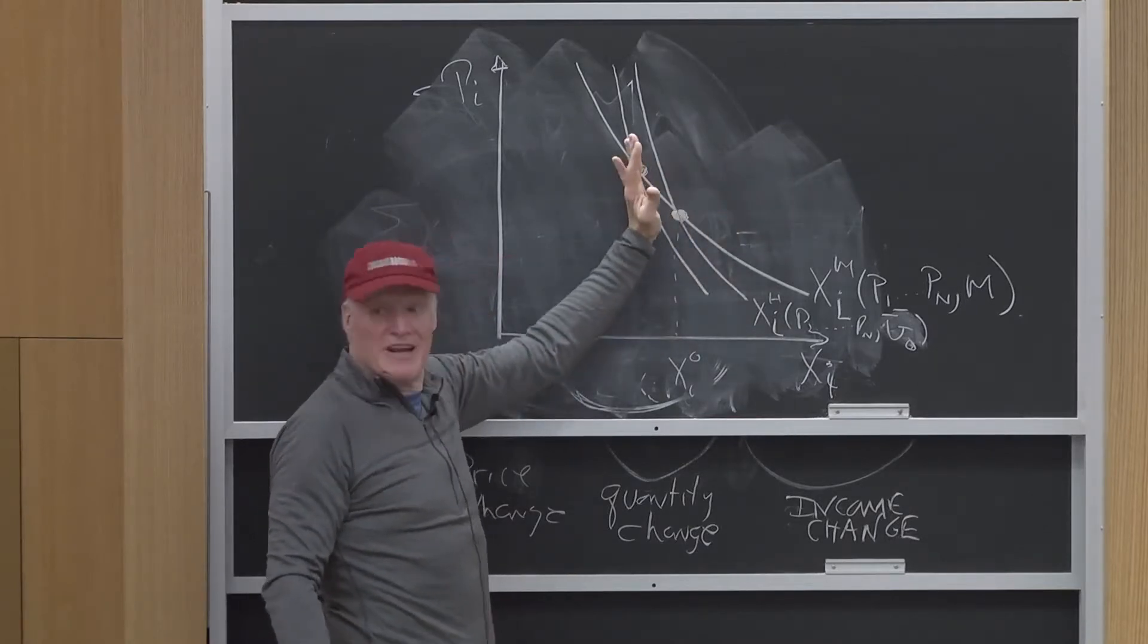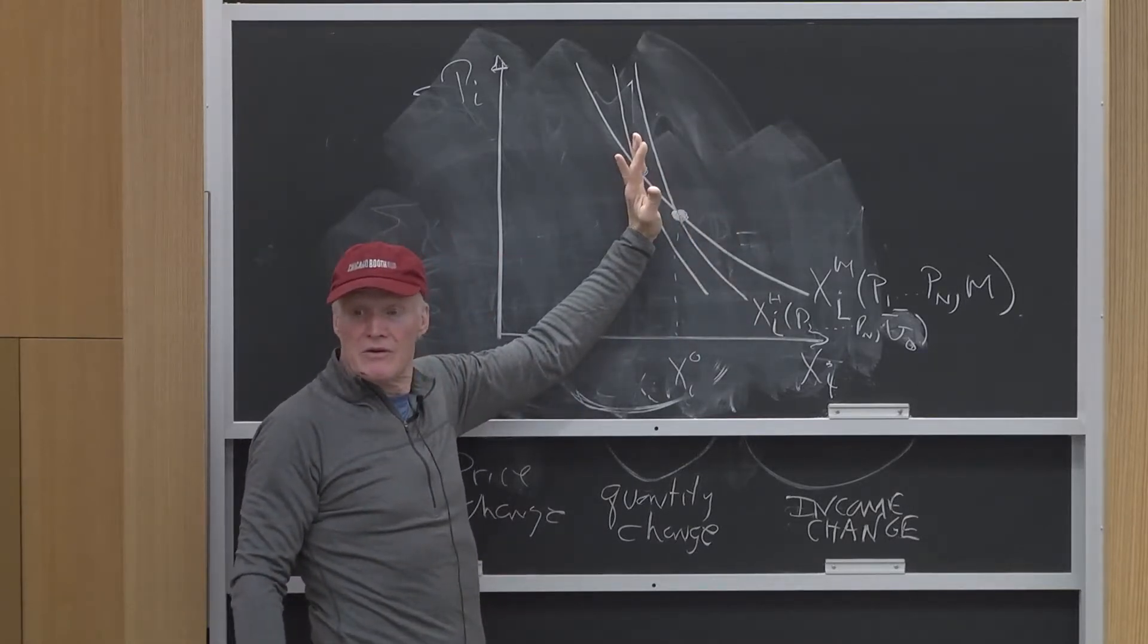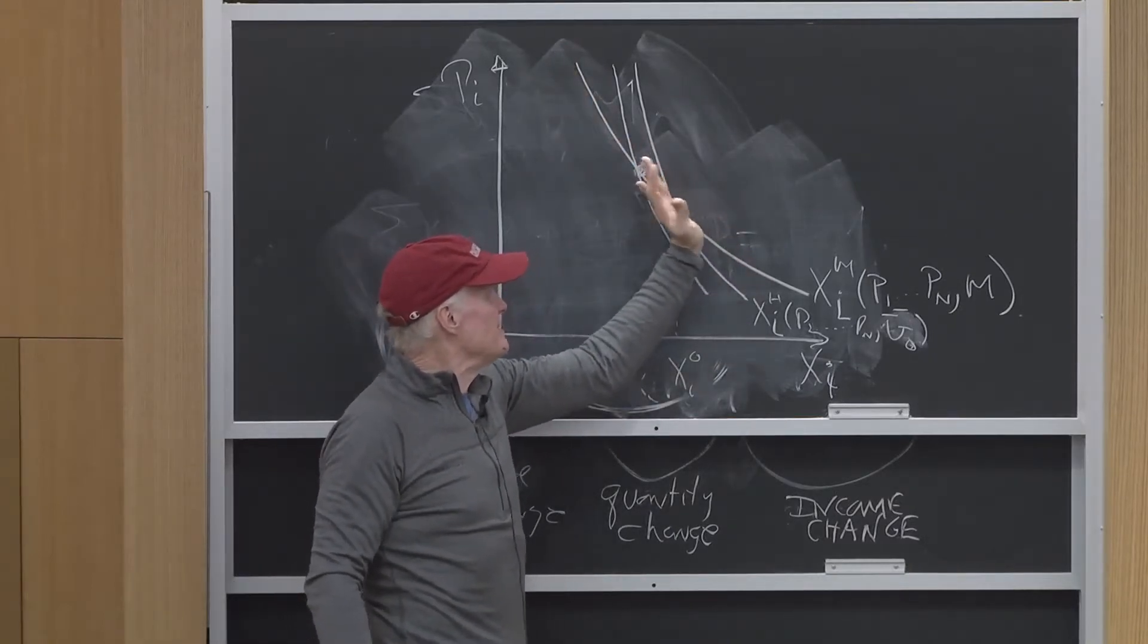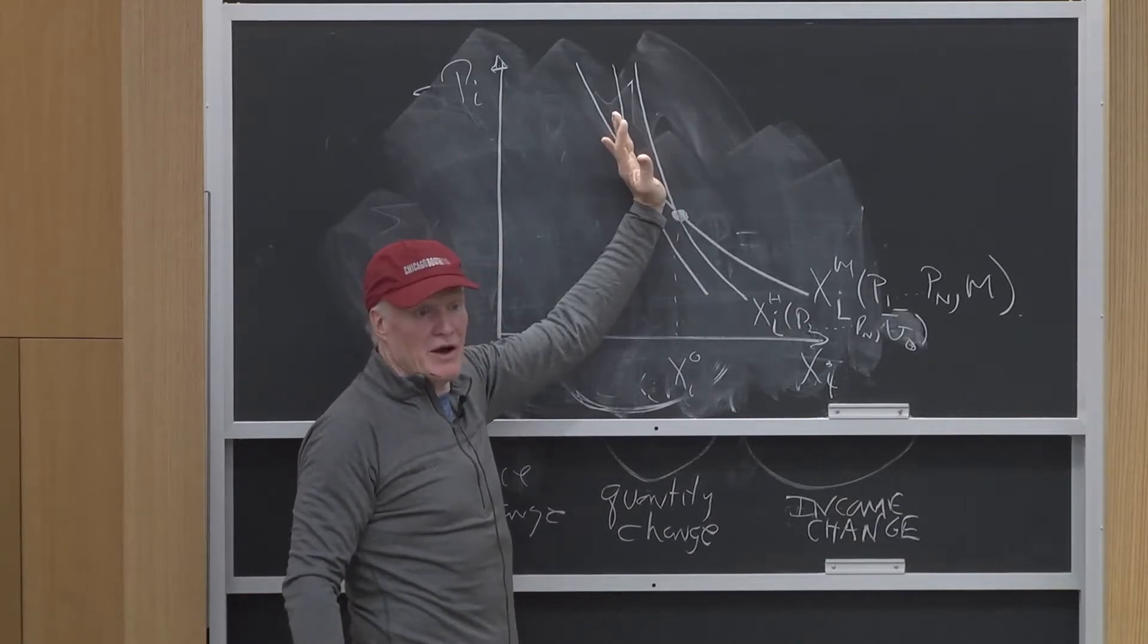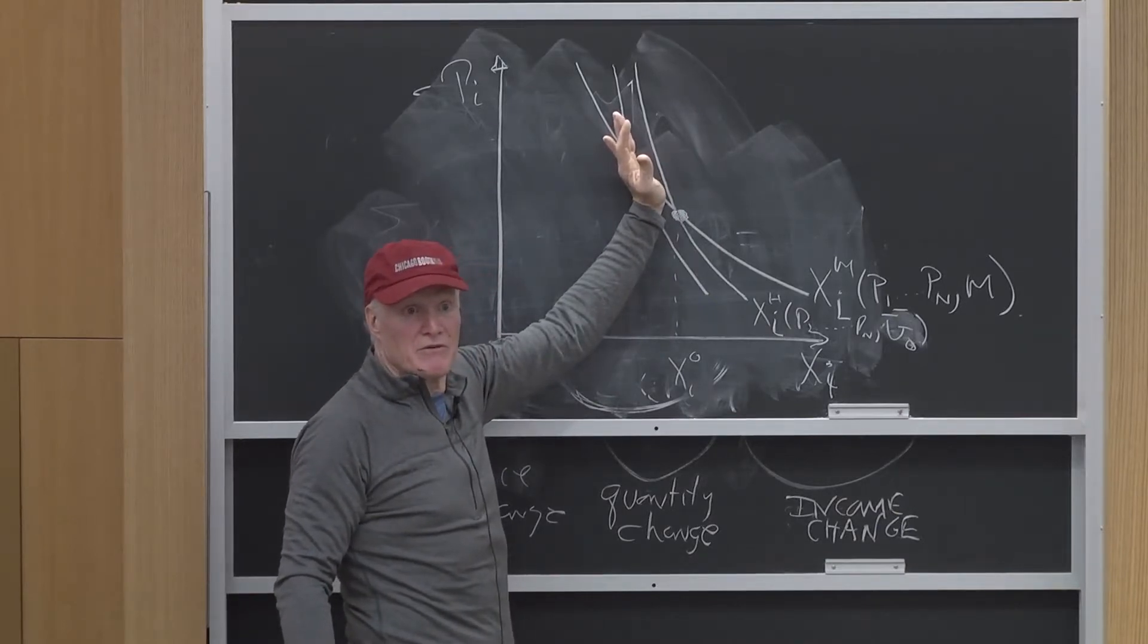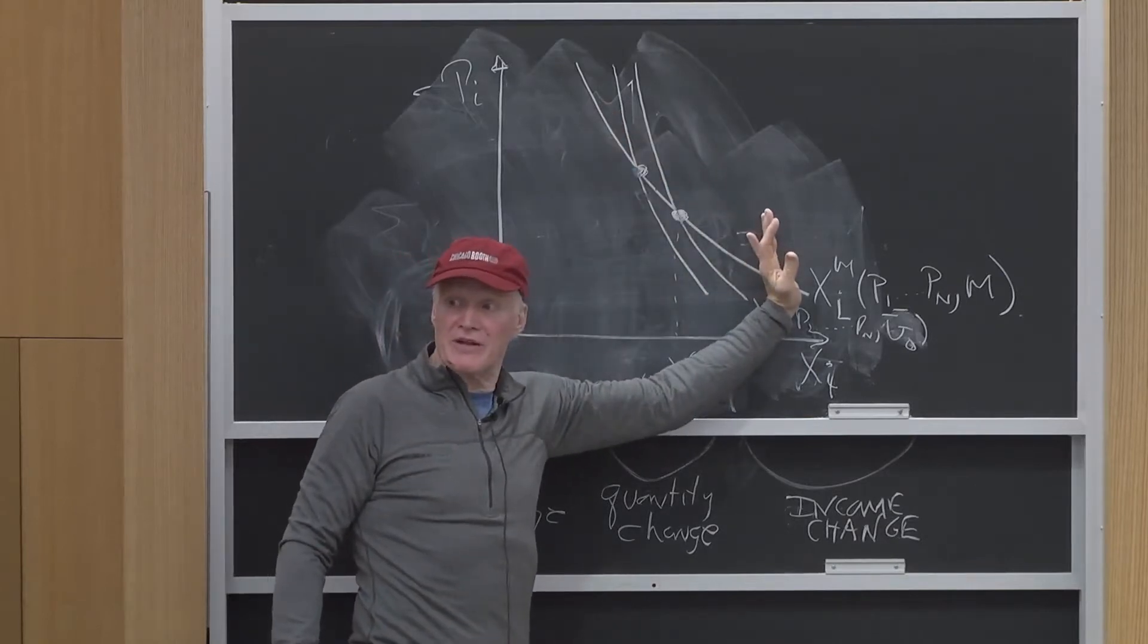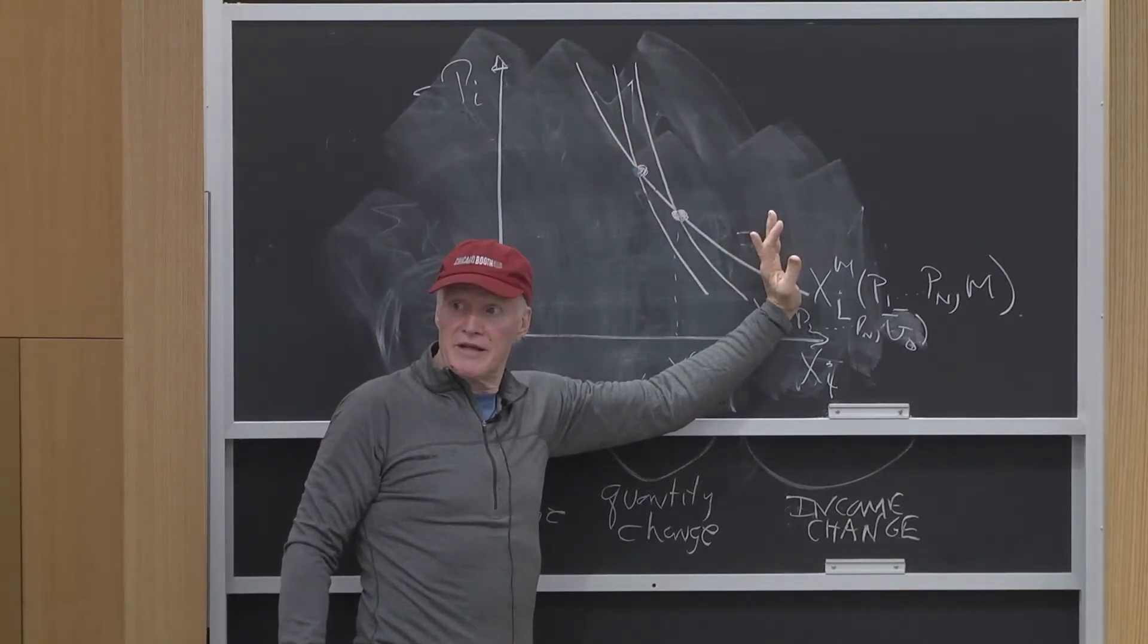There will be another Hicksian demand curve through every point on the Marshallian demand curve. A given Marshallian demand curve corresponds to different Hicksian demand curves depending on where you are. Higher utility levels as I go down the Marshallian demand curve.